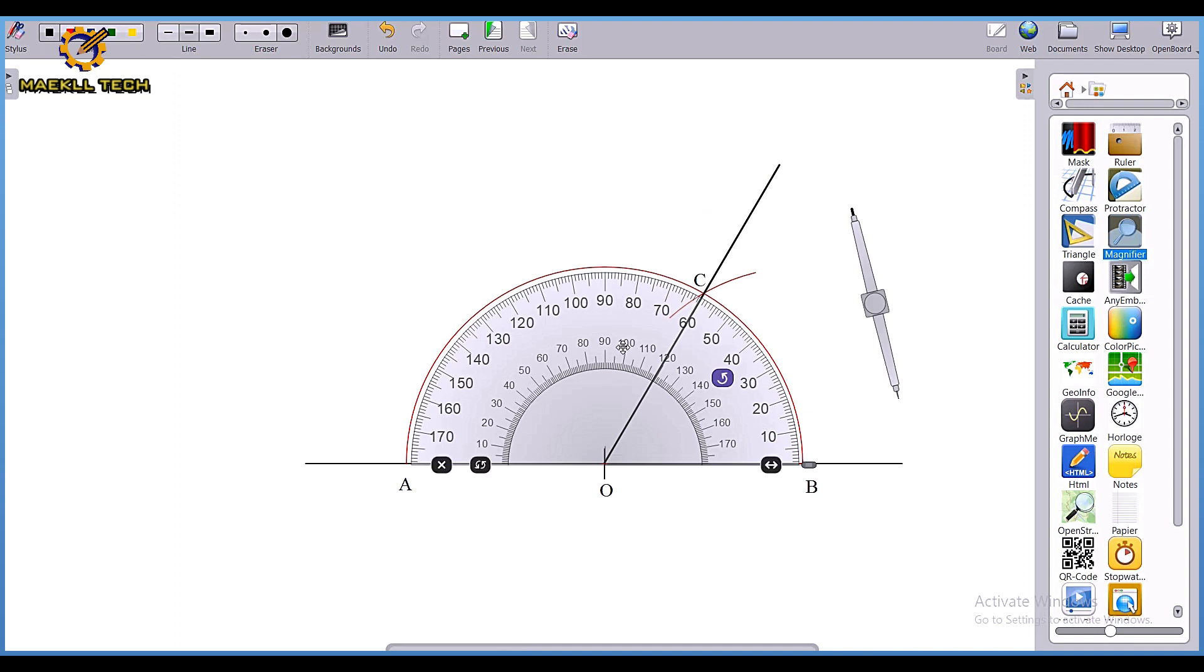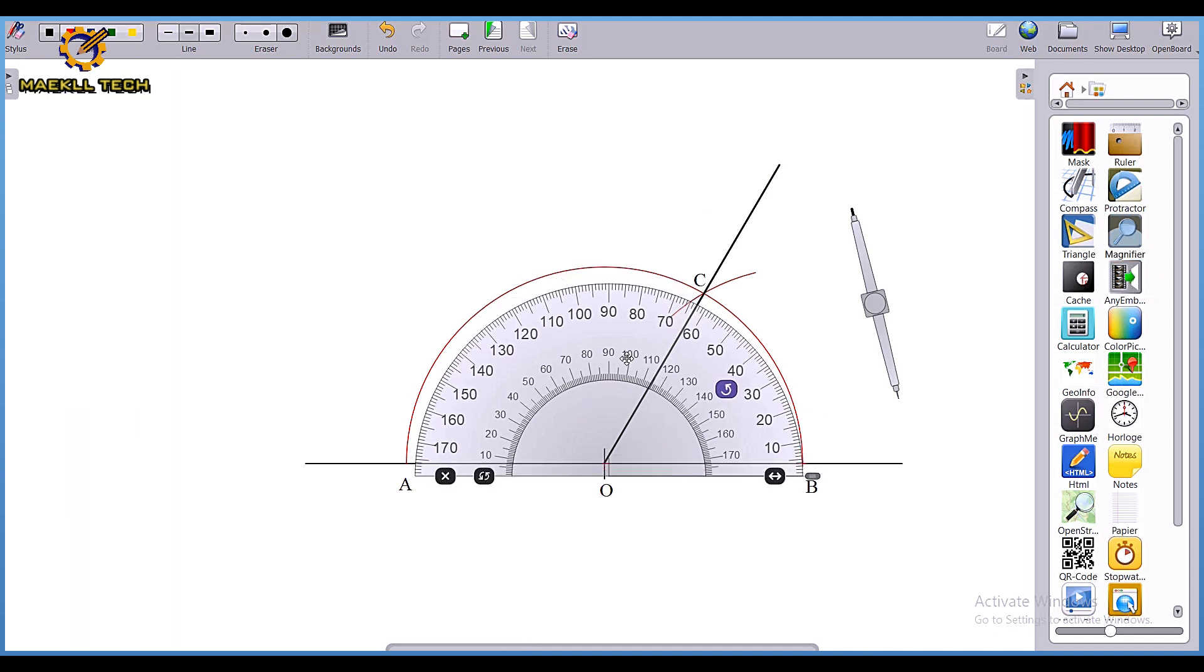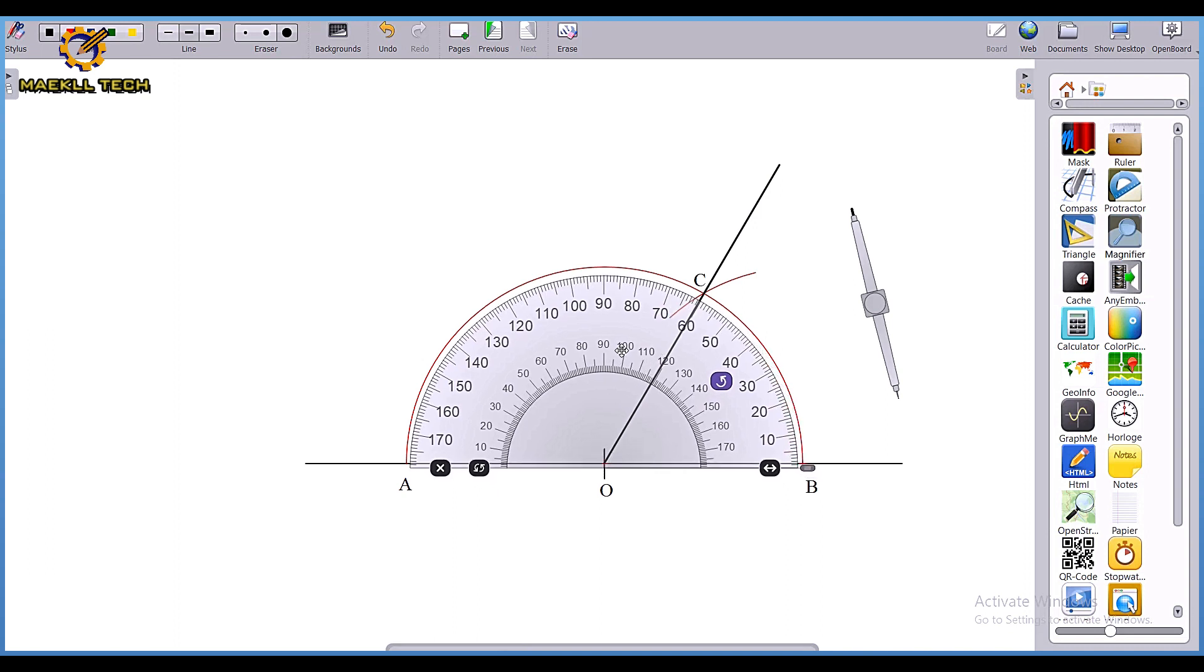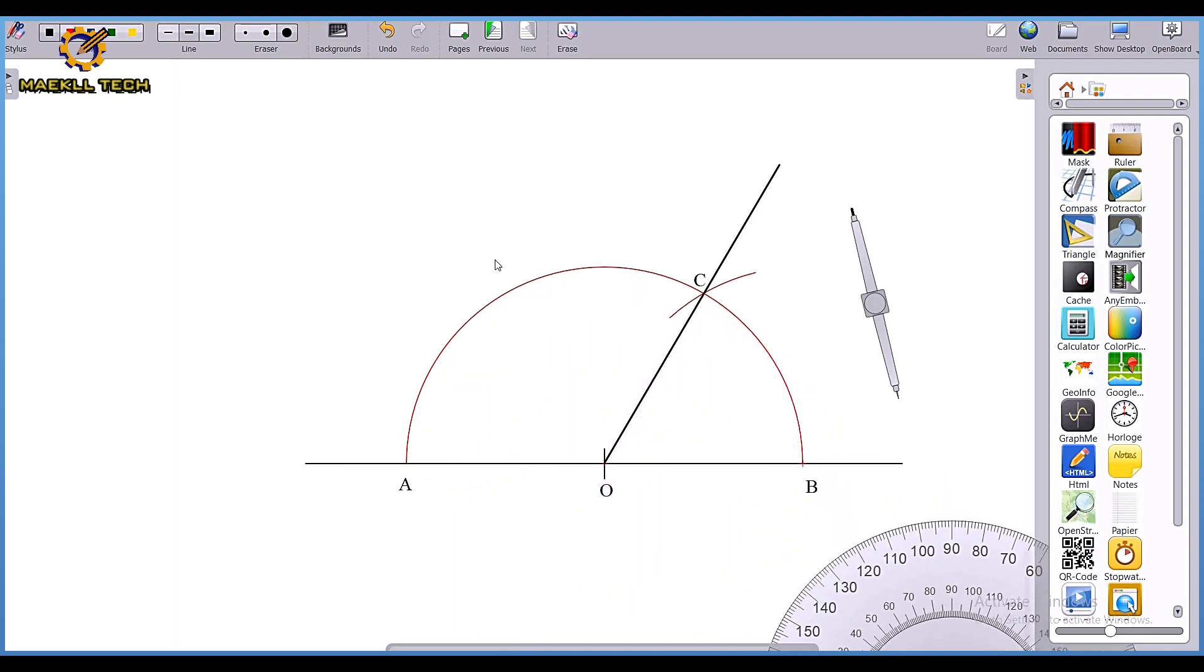Now if you are to construct angle 120 degrees, you know total angle from A to B on the straight line is 180. To construct 120 degrees: 180 degrees minus 60 degrees equals 120. As it is now, the angle from A to C here is 120 degrees.